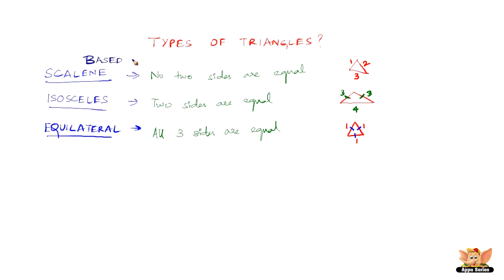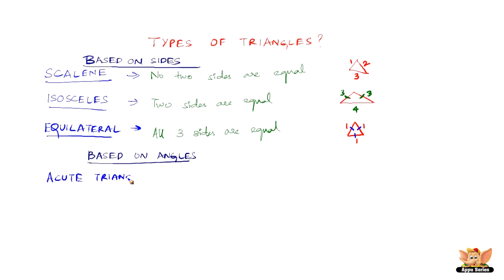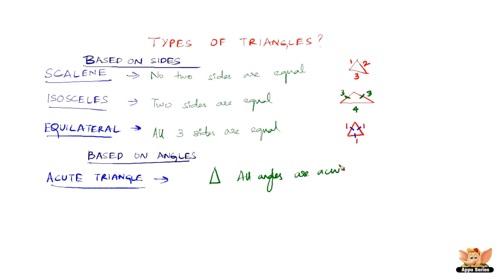These three classifications are based on the sides of a triangle. Another kind of classification is based on angles. The first one is an acute angle triangle. An acute triangle is a triangle each of whose angles is acute — that is, all angles will be less than 90 degrees.